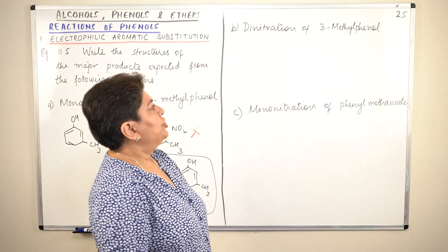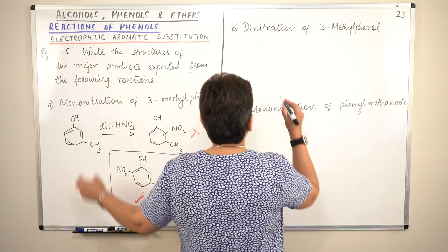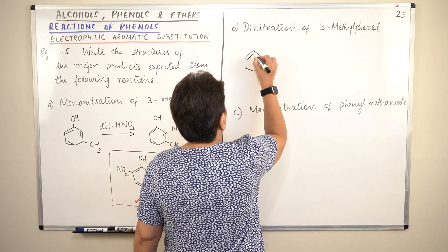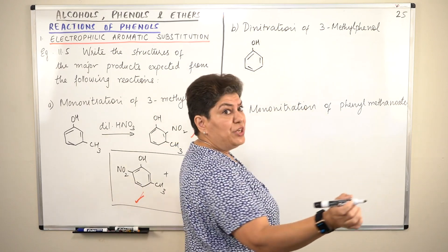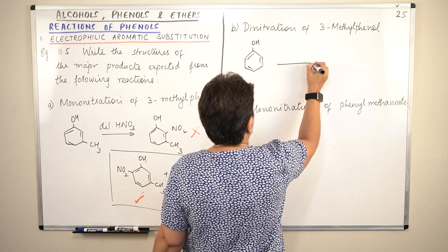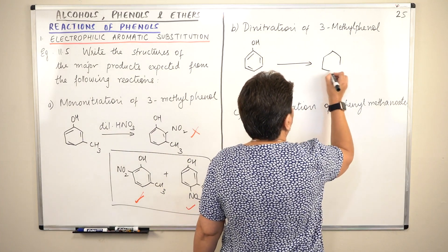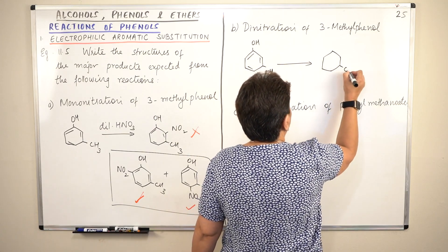Second part. Dinitration of 3-methylphenol. The reactant is the same. 3-methylphenol. OH. And dinitration is taking place. So there are two nitro groups that are attaching. So where do you think the two nitro groups would come? 3-methyl. So again, this is 3-methyl.